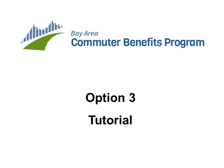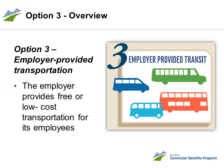Hello and thank you for joining us for this tutorial of Option 3 for the Bay Area Commuter Benefits Program. Option 3 is the employer-provided transportation option, where the employer provides free or low-cost transportation for its employees through a service operated by or for the employer. Employers who select Option 3 can choose to provide transportation from the employee's home community to the worksite in buses, vans, or through a shuttle service.